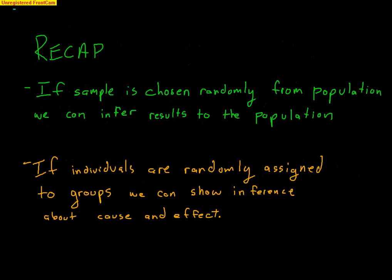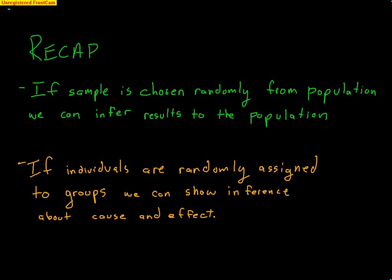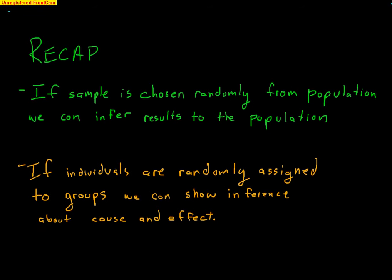Quick recap: if a sample is chosen randomly from a population, we can infer the results to that population — that is population inference. If individuals are randomly assigned to two groups in an experiment, we can show inference about cause and effect. As long as the assignment of who got what was completely random, you can show cause and effect.